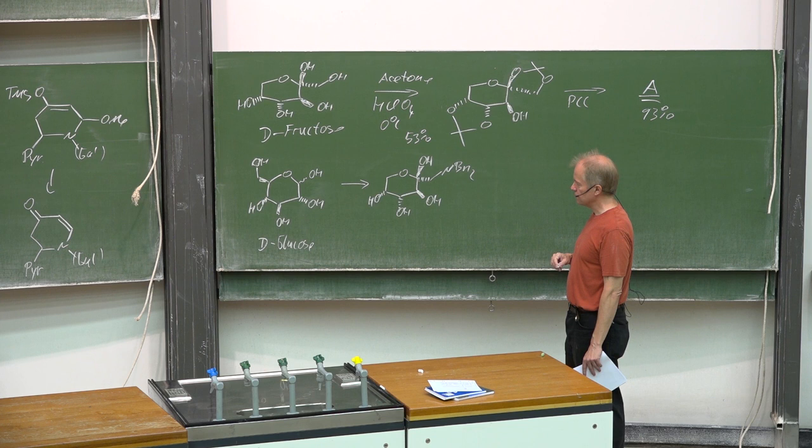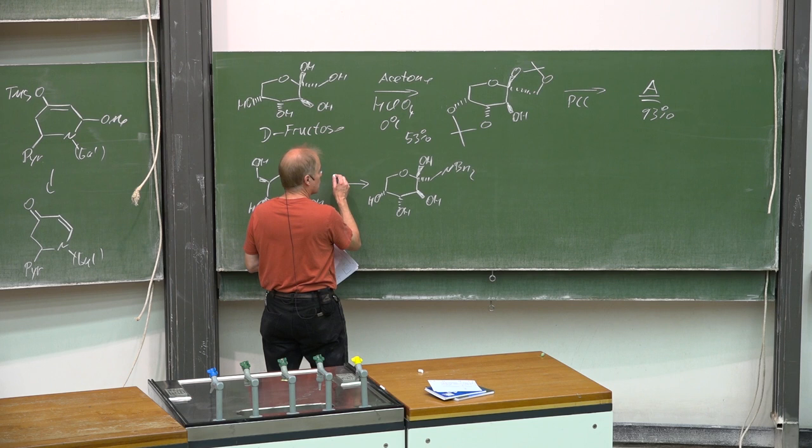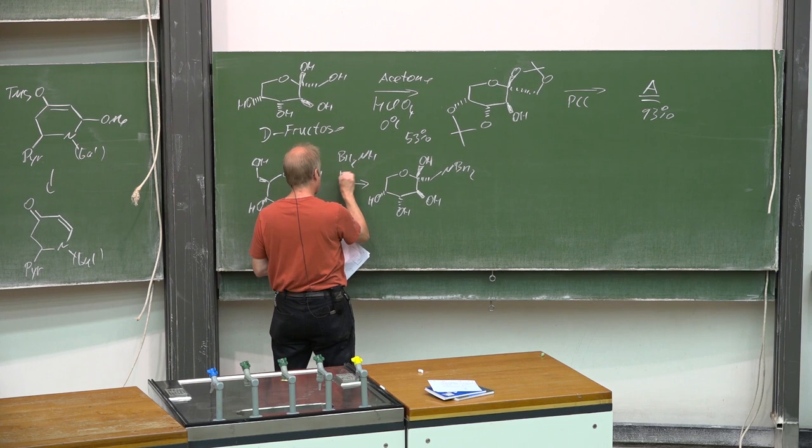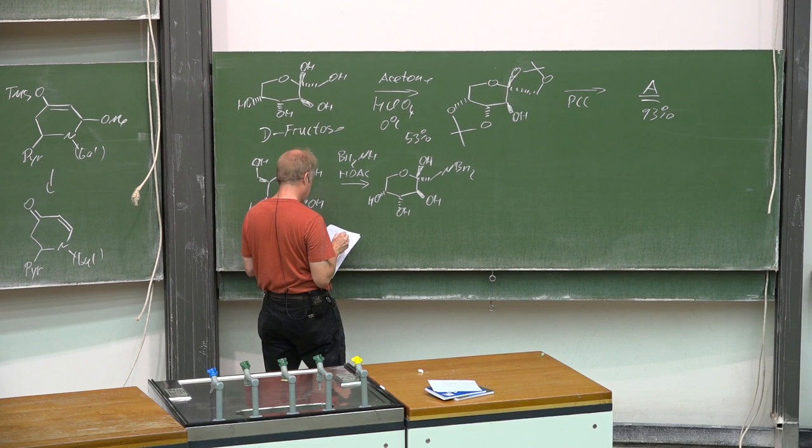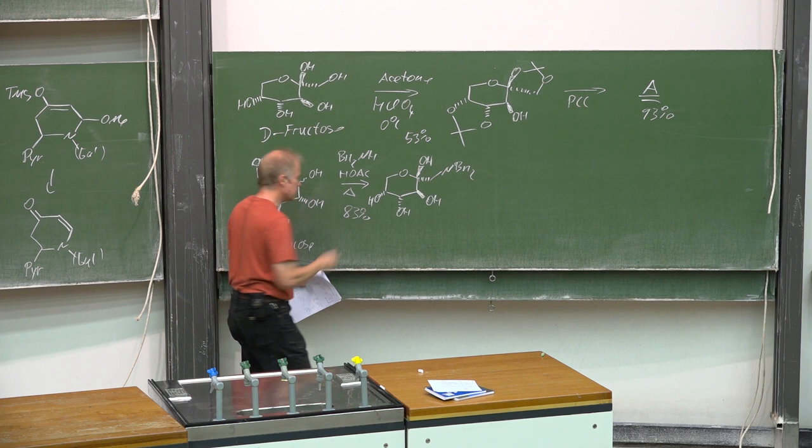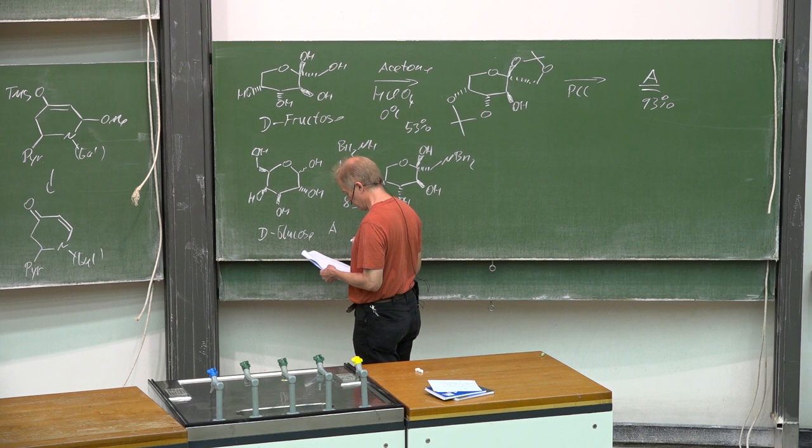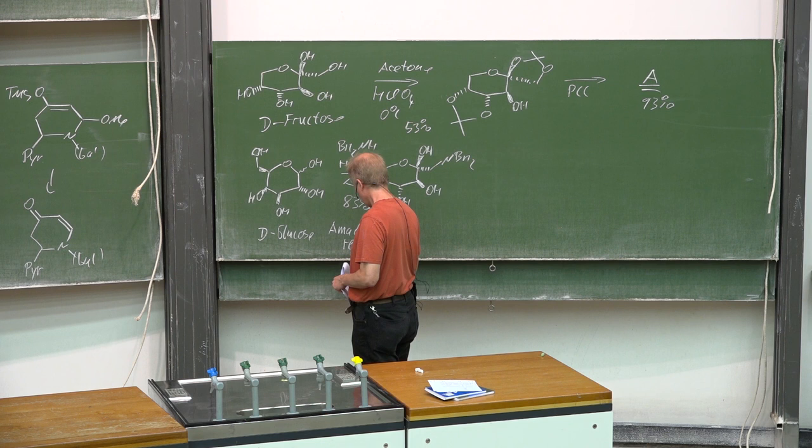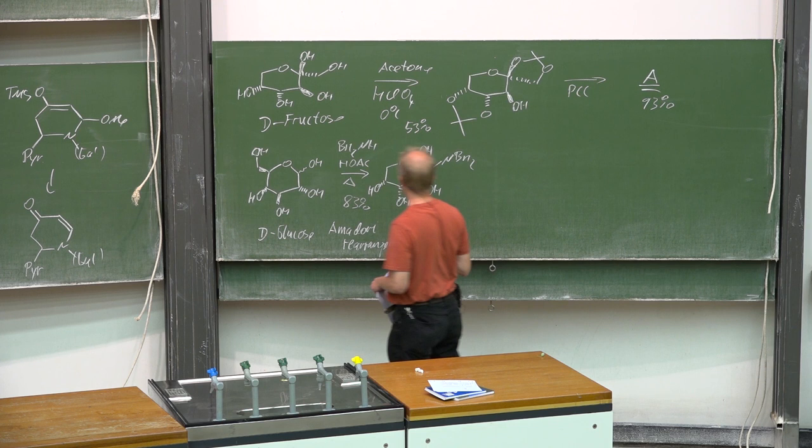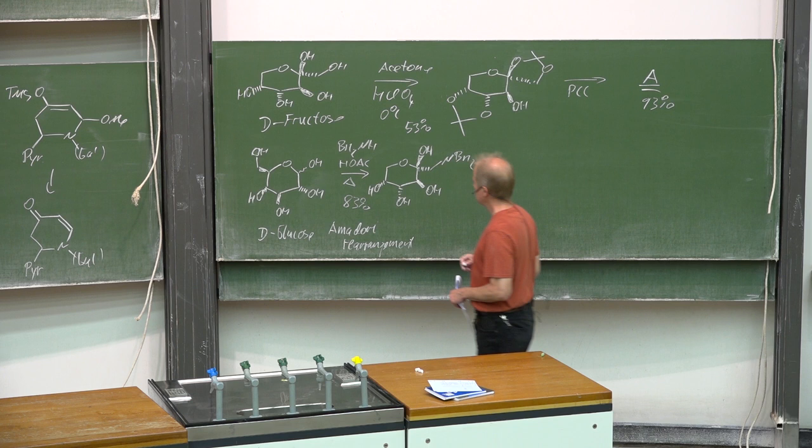This is a very reliable process. You need dibenzylamine, acetic acid, heating it up. 83% yield is usually obtained, and this is called the Amadori rearrangement. It is a nice exercise you could do at home to try to figure out that mechanism, but we will concentrate on the next steps.